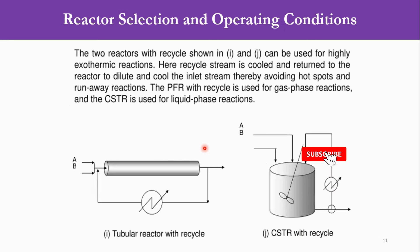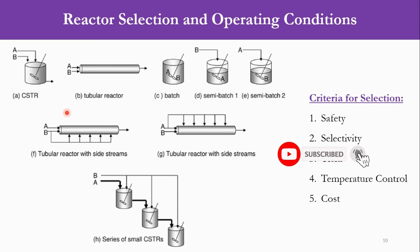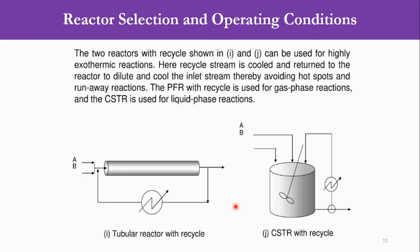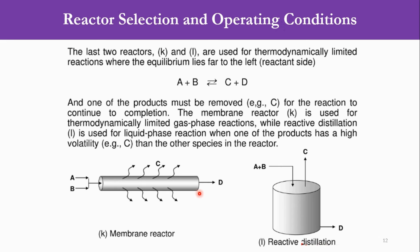So these are the different types of reactors which we have seen, starting from the simple CSTR, tubular, batch, semi-batch. Then we have moved to a bit advanced, that tubular with side streams, then CSTR in series, then tubular and CSTR with recycle. This one for gas phase, this one for liquid phase. Then membrane reactor for gas phase and reactive distillation for liquid phase. So these are the different types. And again, which type to be chosen is dependent on the five parameters which we have seen.